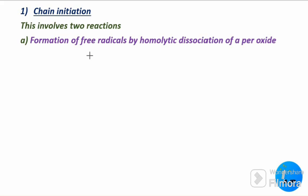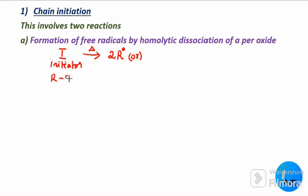Let me explain with a general example. Let us take I, which is nothing but the initiator. When we heat this initiator, it forms two free radicals, represented by a dot at the top. Now, taking a peroxide: R-C(=O)-O-O-C(=O)-R, where R represents some alkyl groups. When this peroxide is heated, it undergoes homolytic dissociation.